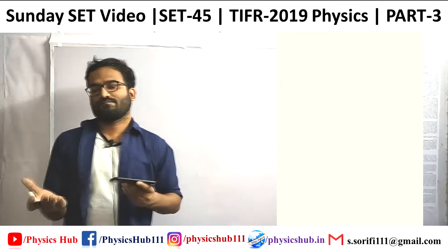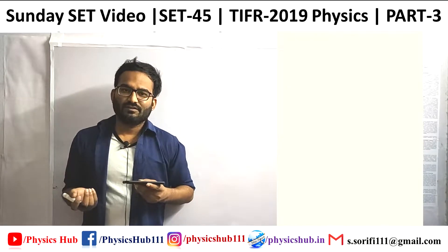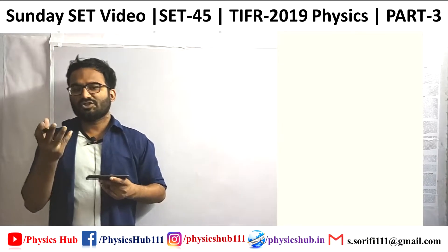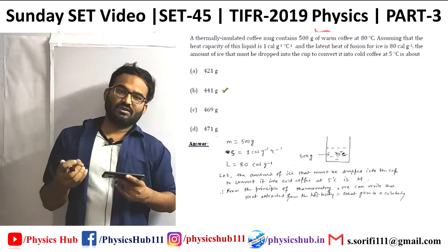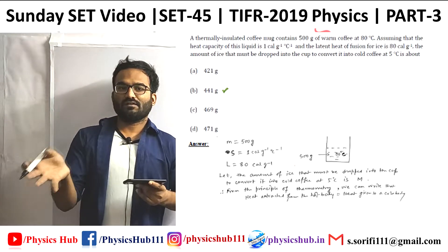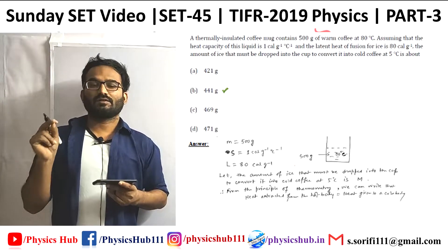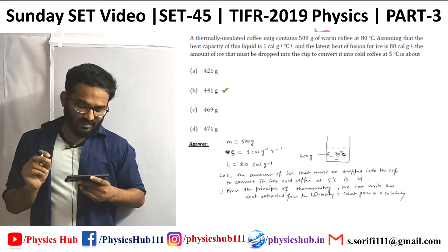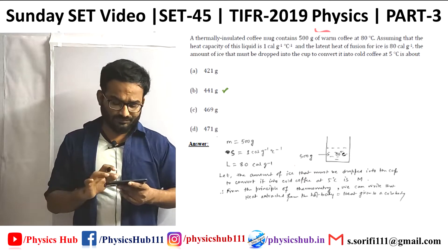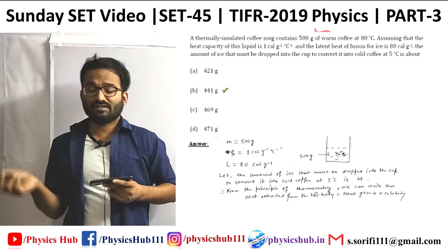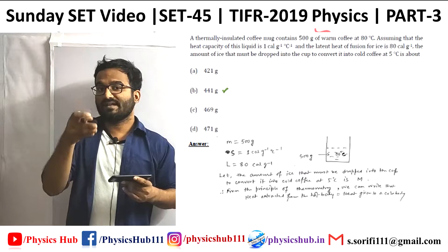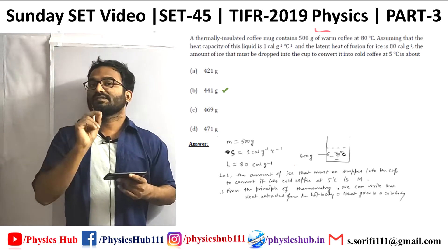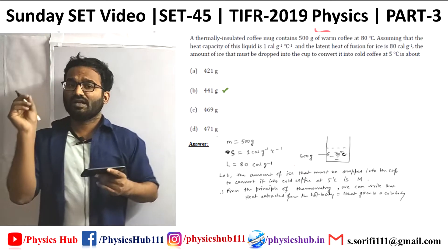This problem is from higher secondary level and needs one principle — the principle of calorimetry. Heat absorbed by the colder body equals heat rejected by the hotter body. The question also contains a minor error: they wrote 'heat capacity' but from the units it should be 'specific heat capacity.' Heat capacity is mass times specific heat capacity, so the specific heat capacity s is given as 1 calorie per gram per degree centigrade.